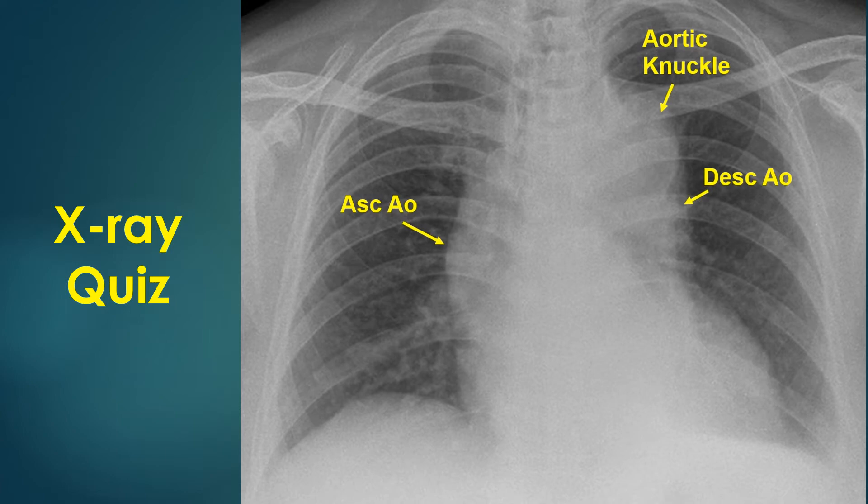X-ray chest shows mediastinal widening due to aortic enlargement. Possibilities to be considered are aortic aneurysm, aortic dissection, and unfolding of the arch in the elderly. In the given clinical scenario of a person presenting with pain in the left scapular region, aortic dissection has to be considered first.